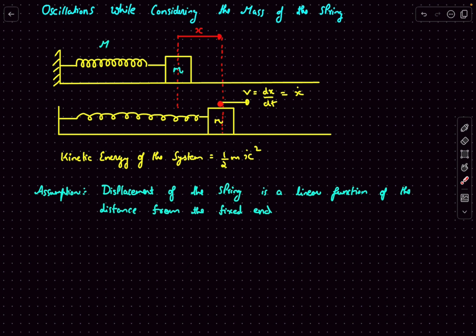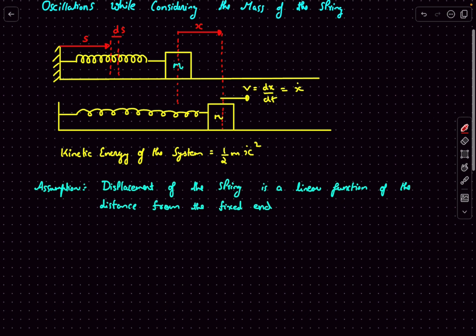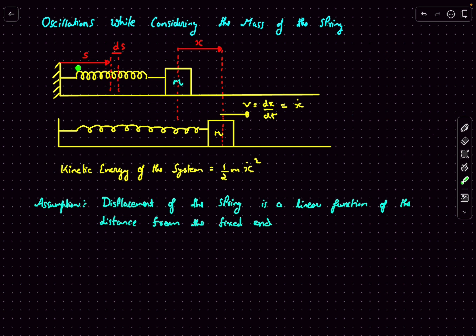What does that mean? The mass got displaced by an amount x towards the right. If we ask what is the displacement of the spring, the answer depends — the end of the spring attached to the mass gets displaced by x, whereas the end attached to the wall does not move at all. Let's look at a differential element: move a distance s along the spring and consider an element of differential width ds. We want to determine the displacement of this element in terms of x.